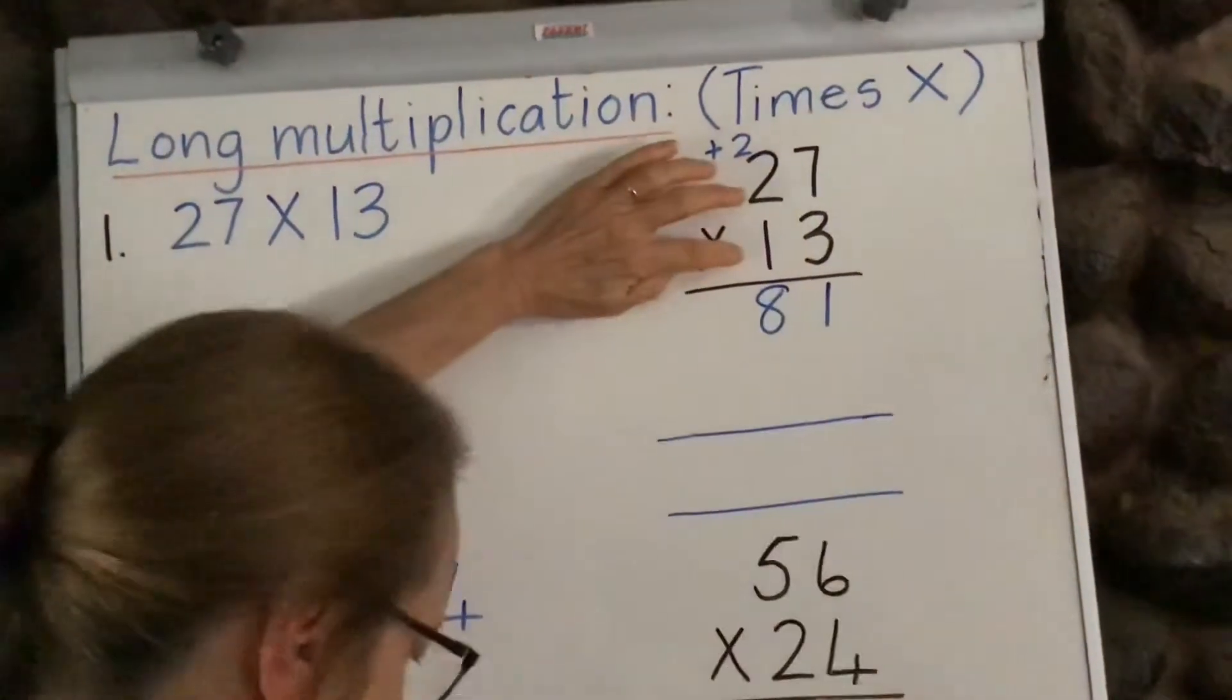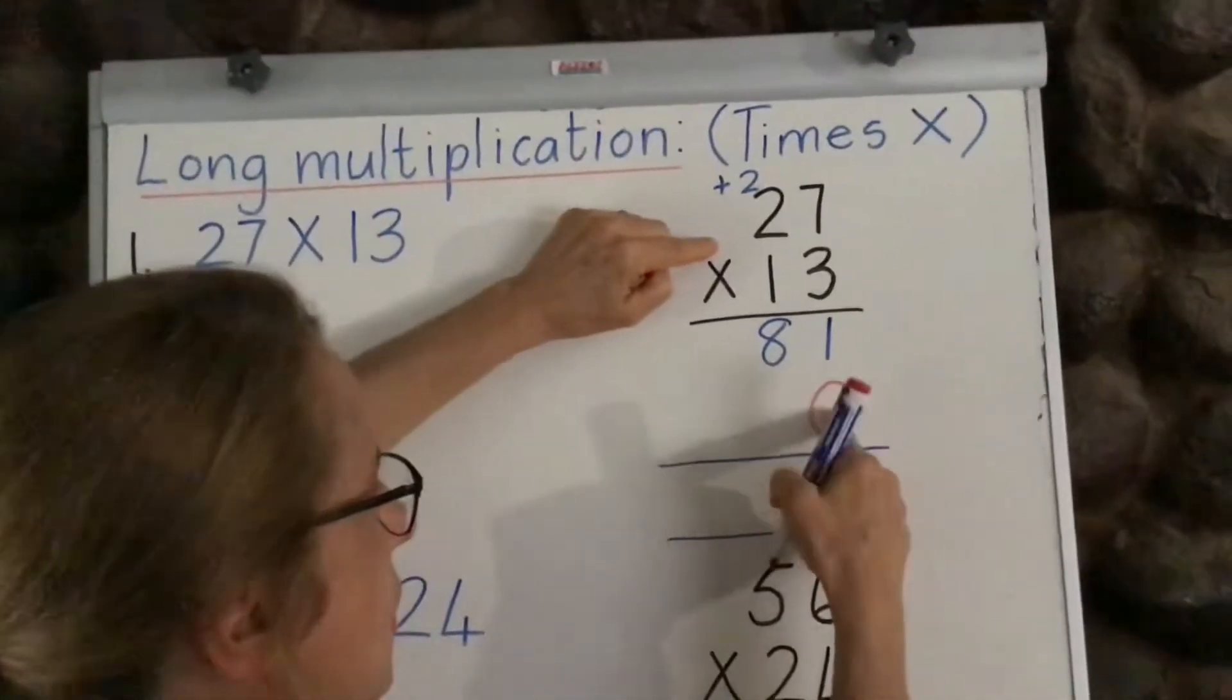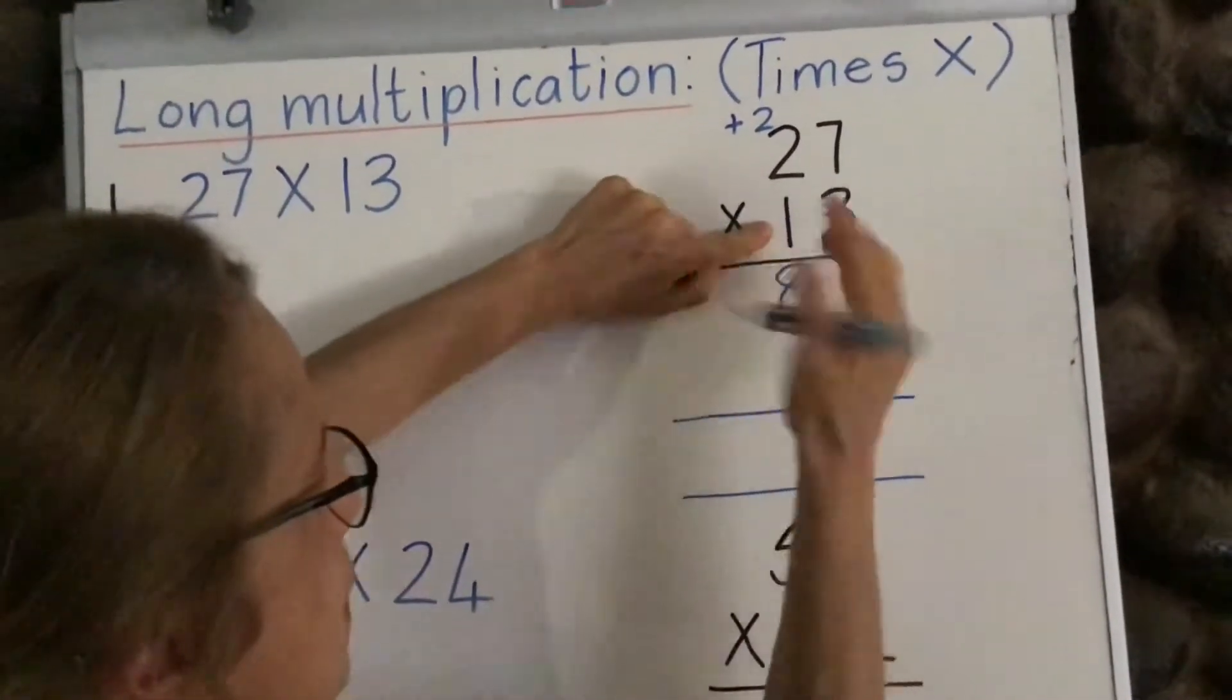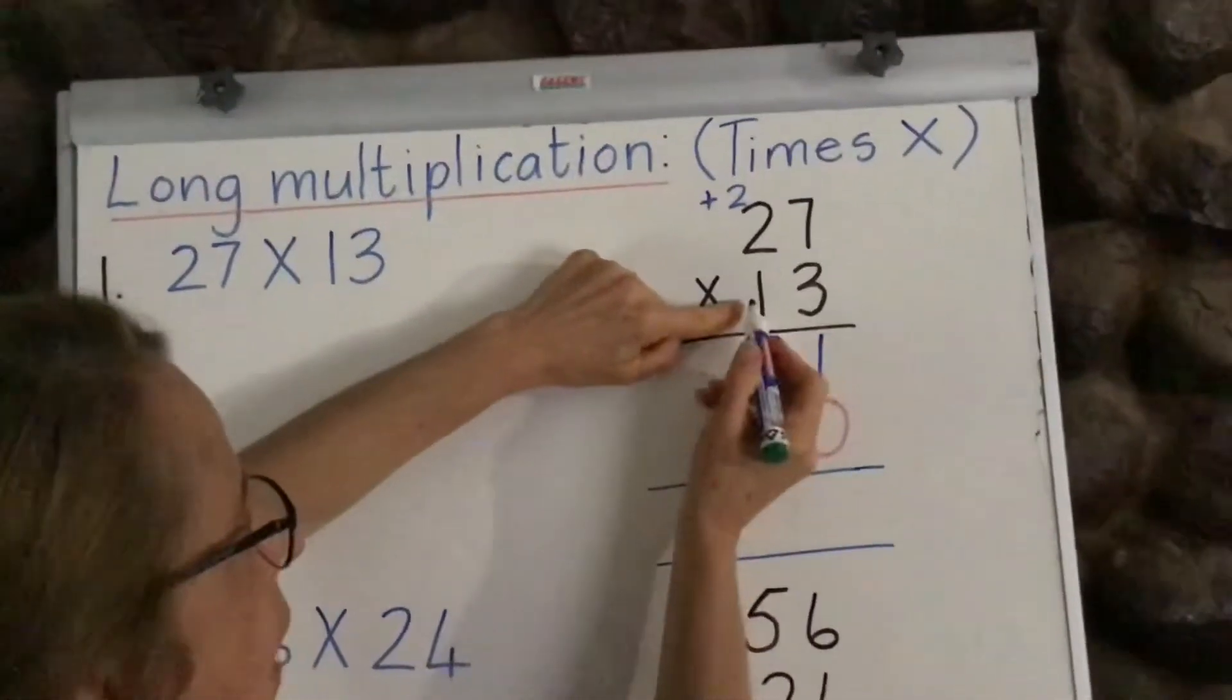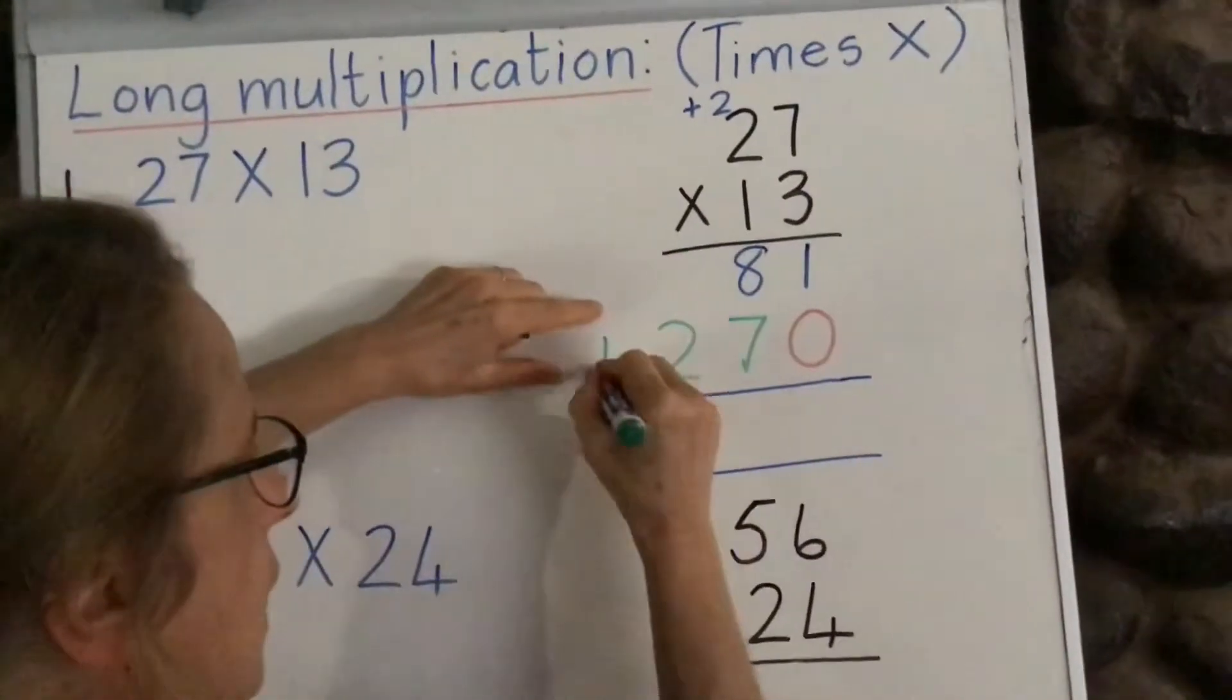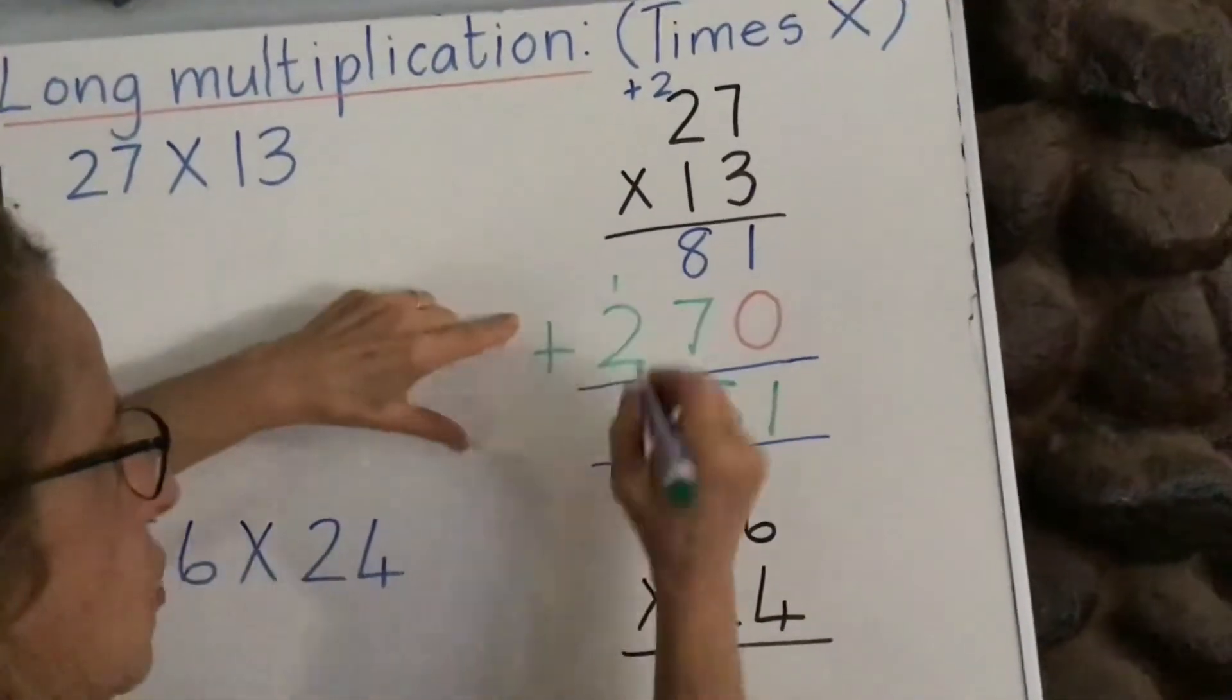And now, when we get to this one, we are going to put a zero first. I'm going to use another color, and I want you to also use red for your zero, so that you know you've always put it there before you begin. And then we're going to be going to our second number here, which is a one in this case. It's a 10, but because we've put a zero down, we only use it as a one. We say one times seven is seven. We say one times two is two. And then the last thing we have to do is we have to add up these two rows of working out. So we say one plus zero is one. Eight plus seven is 15, and two plus one is three.